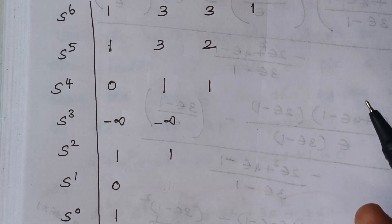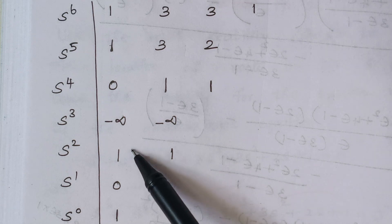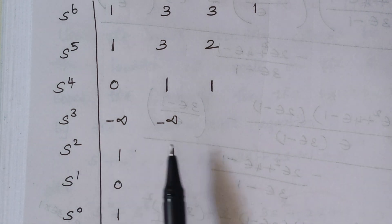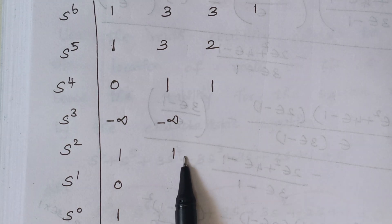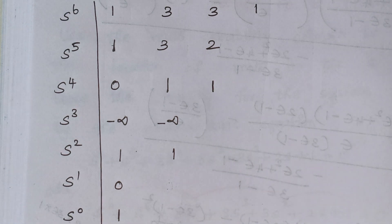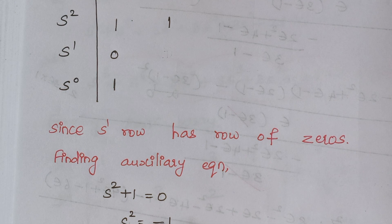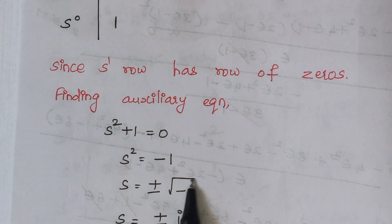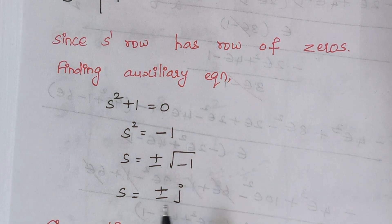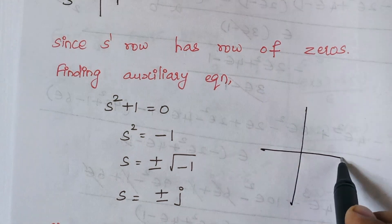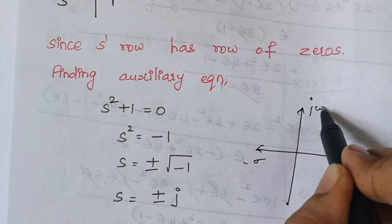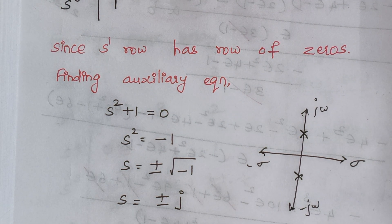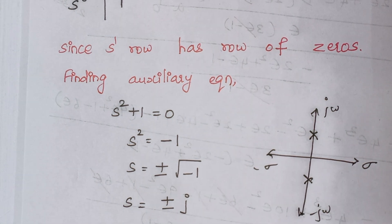Whenever there is a row of zeros, we find the auxiliary equation from the row immediately above the row of zeros. Here the auxiliary equation comes from the s^2 row: s² + 1 = 0. Solving: s² = −1, so s = ±√(−1) = ±j. This shows the roots are located on the imaginary axis — one root at +j and another at −j. That concludes part 1 of the problem; part 2 will continue tomorrow. Thank you.